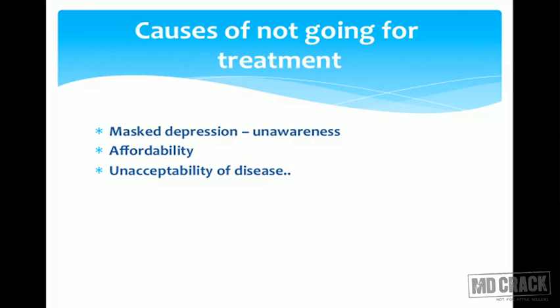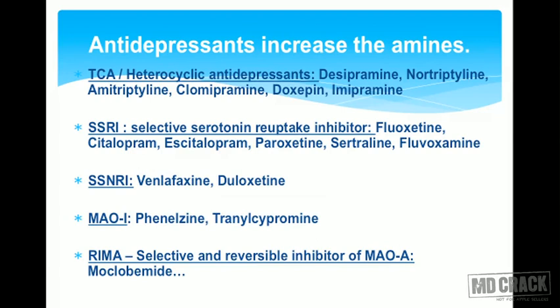Treatment uses antidepressant drugs aimed at increasing amine levels, most likely by inhibiting amine reuptake. The first group is tricyclic or heterocyclic antidepressants such as desipramine, nortriptyline, amitriptyline, clomipramine, doxapine, and imipramine — the TCAs contain 'pramines' and 'triptylines.' The next important group is SSRIs — selective serotonin reuptake inhibitors — including fluoxetine, paroxetine, citalopram, escitalopram, sertraline, and fluvoxamine.